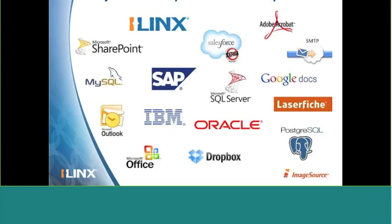iLinks eForms is integrated with a large number of back-end systems like SAP, Oracle, FileNet, iLinks Capture and iLinks Content Store, SharePoint, Salesforce, and more. This allows you to gather real-time information from those systems to perform validations and lookups within the form environment — something that's impossible with paper. Additionally, your submitted form data can be delivered immediately back to those line of business systems, with no lag waiting for a paper form to be mailed through the postal service, sorted in the mailroom, opened, filed, and then re-keyed into the back-end system.